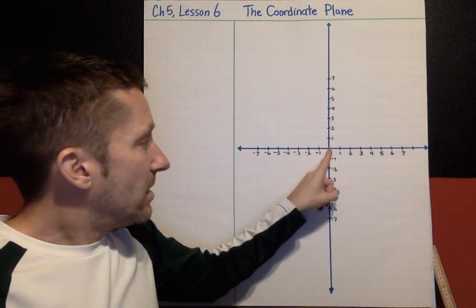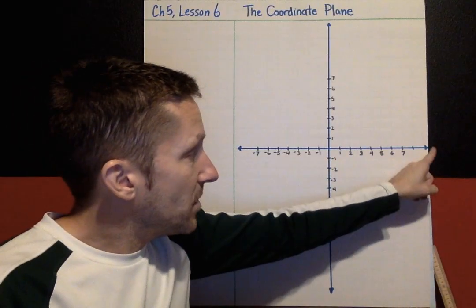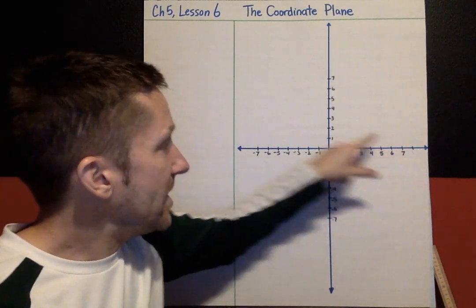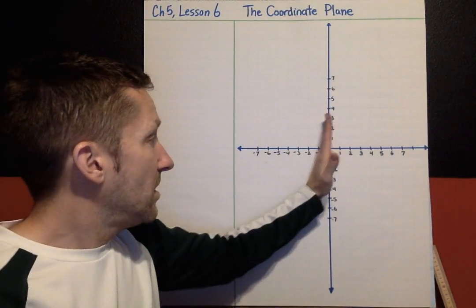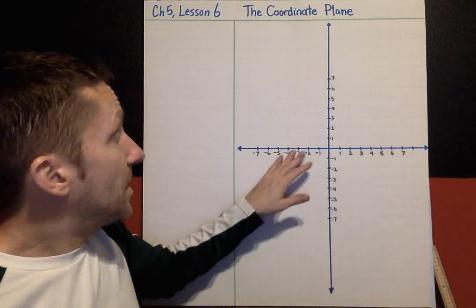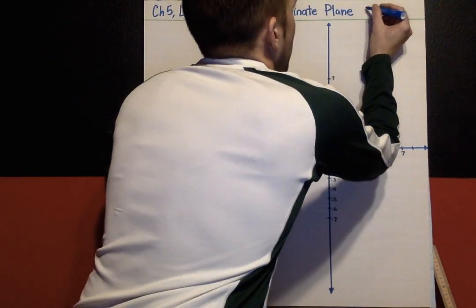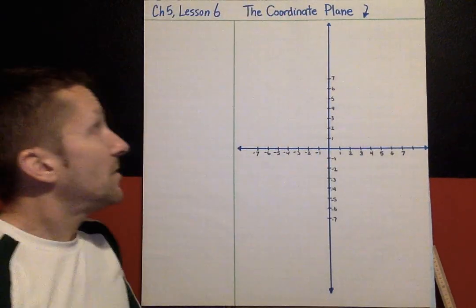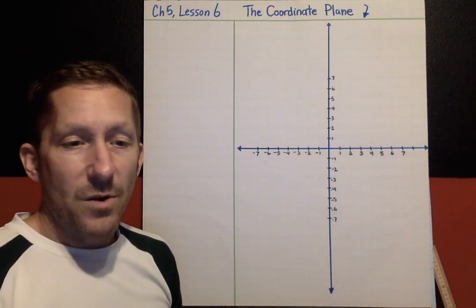They cross right at 0, 0. Positive numbers count to the right and up. Negative numbers count to the left and down. So this whole diagram is a coordinate plane.